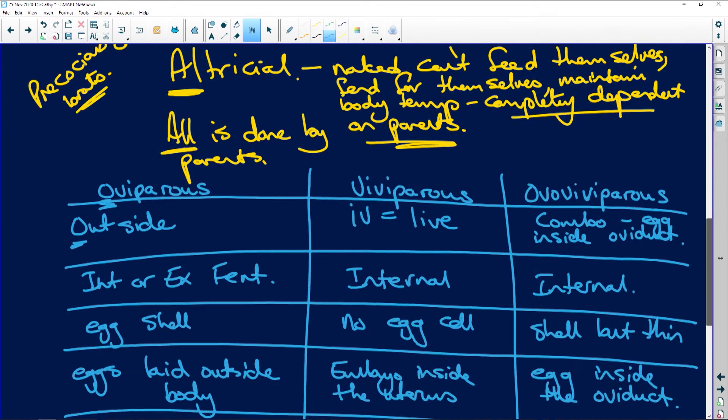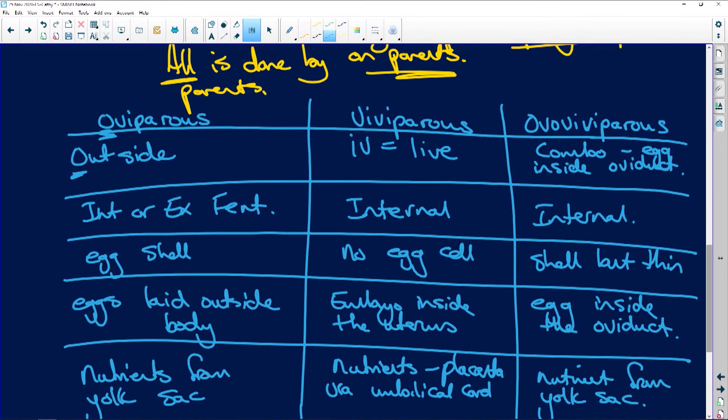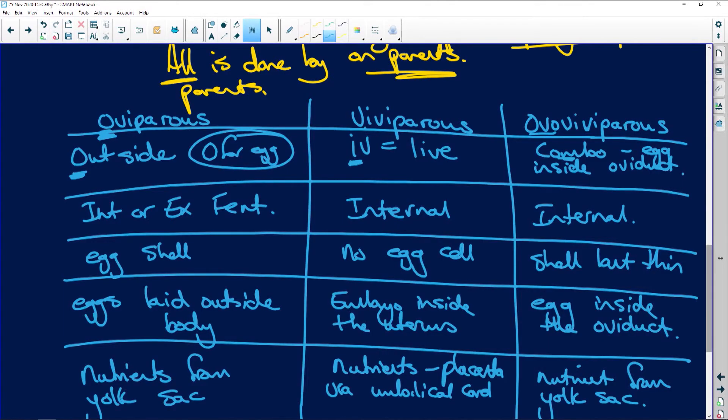Let's look here. We got oviparous, viviparous, and ovoviviparous. This is a combination. So oviparous, think of the O for oviparous and O for outside, and also O for egg because that's what an egg looks like. An egg is round or oval shape. So oviparous, egg laying. Viviparous, think of IV for viviparous and IV for live. So the babies are born live.